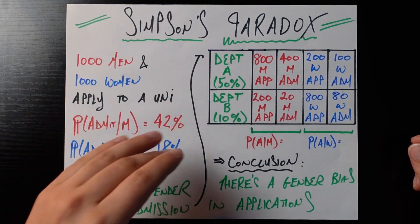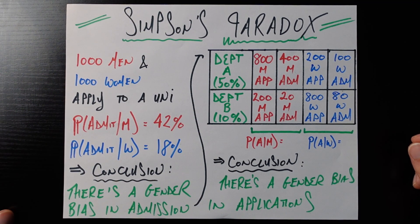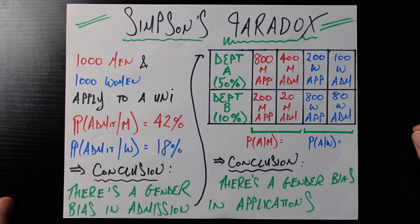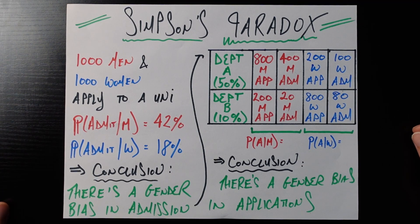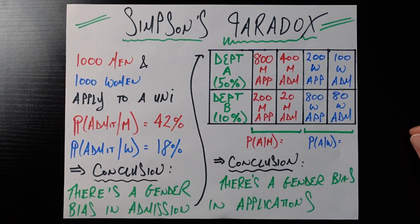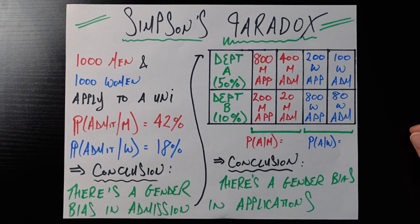Department A accepts a whole 50% of people who apply there. It's pretty open to accepting people. Department B, however, is very, very selective. Maybe it's a field that not a lot of people get into. There's not a lot of resources. And so they really only have to accept the best of the best. They only accept 10% of the people who apply.